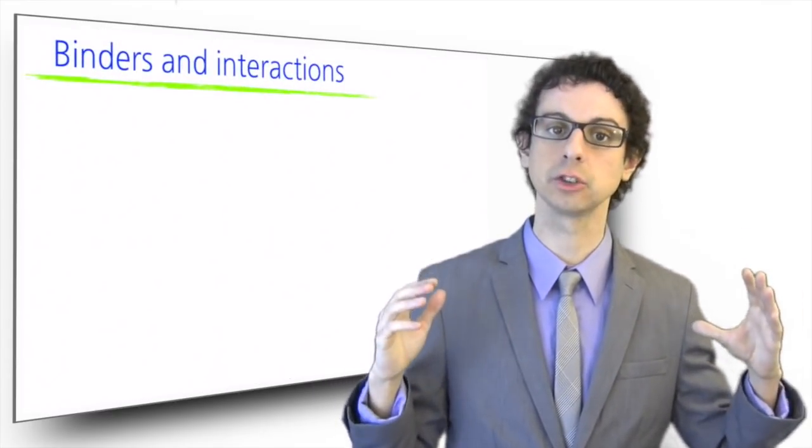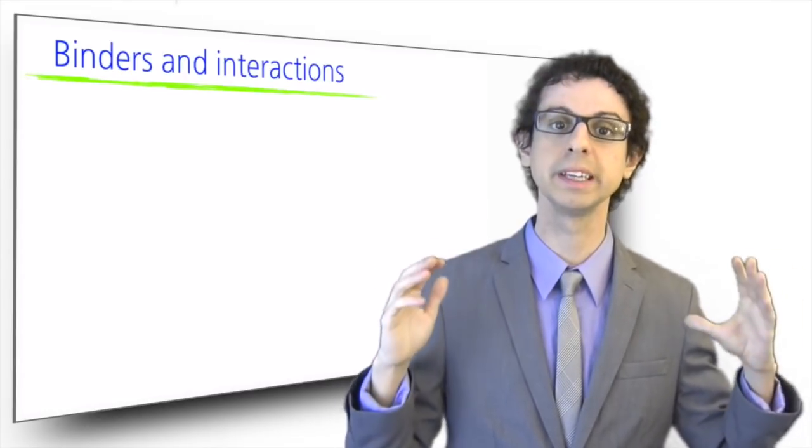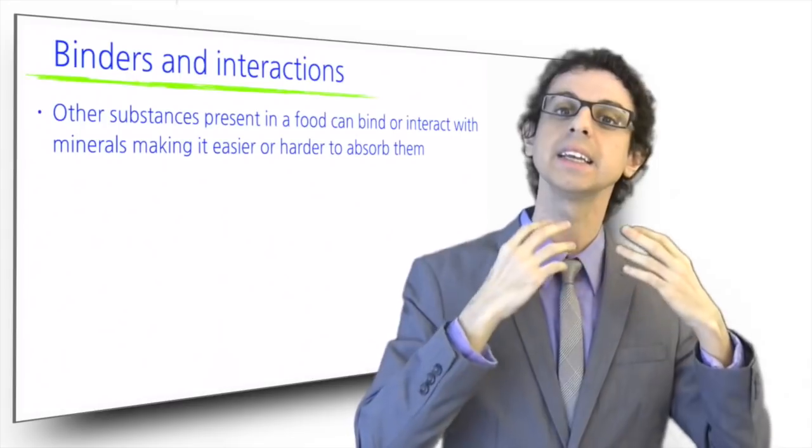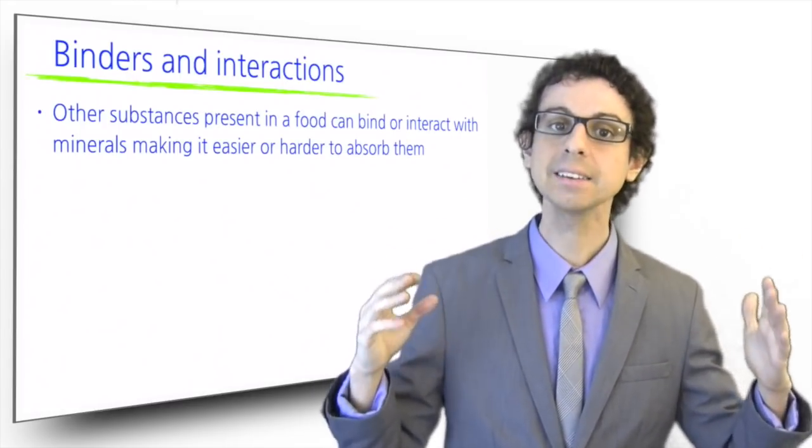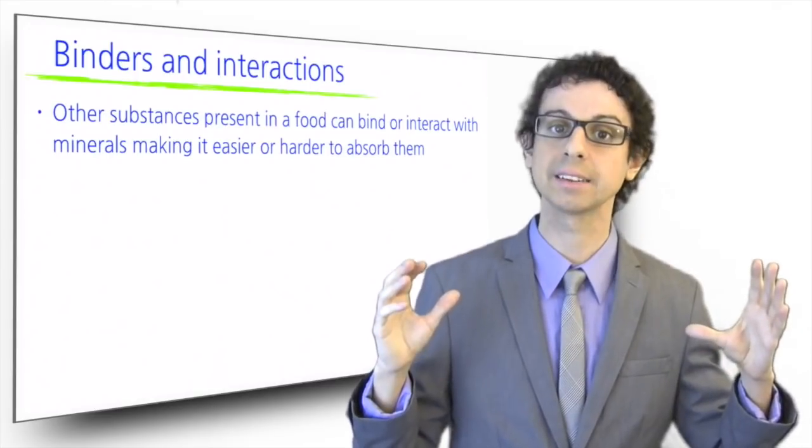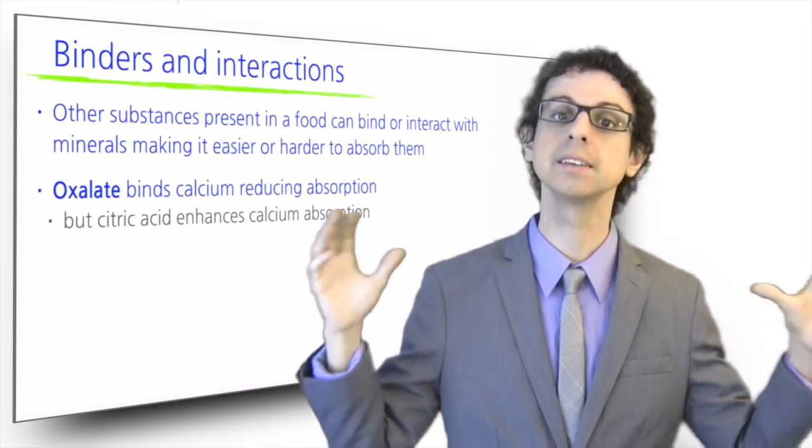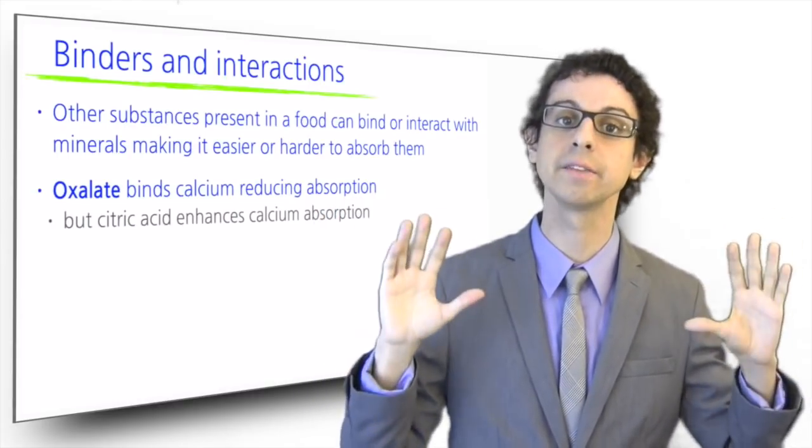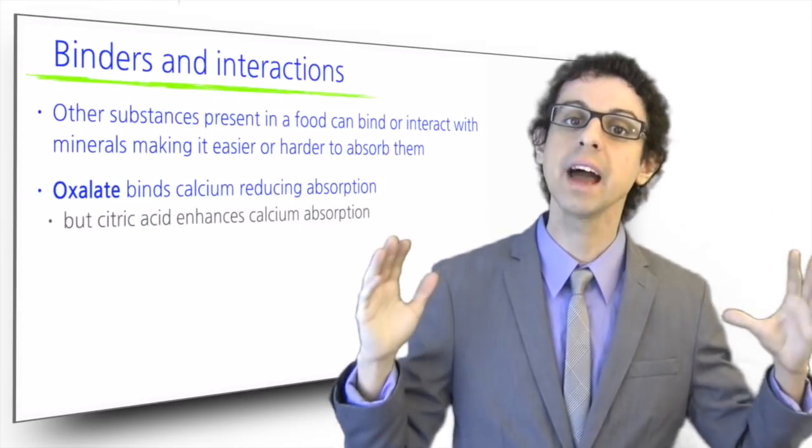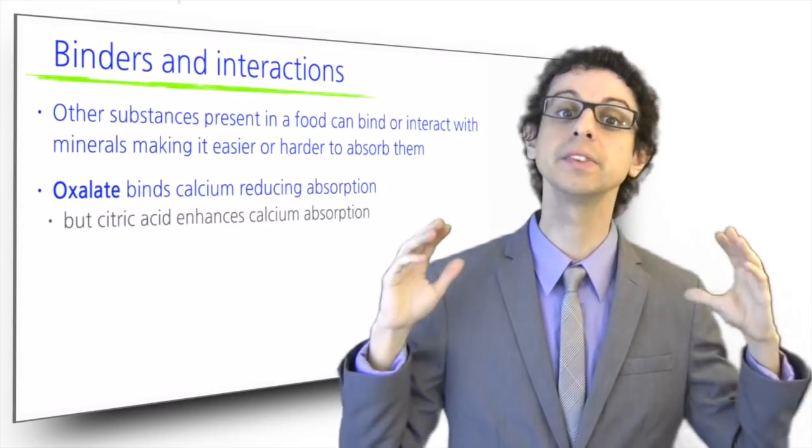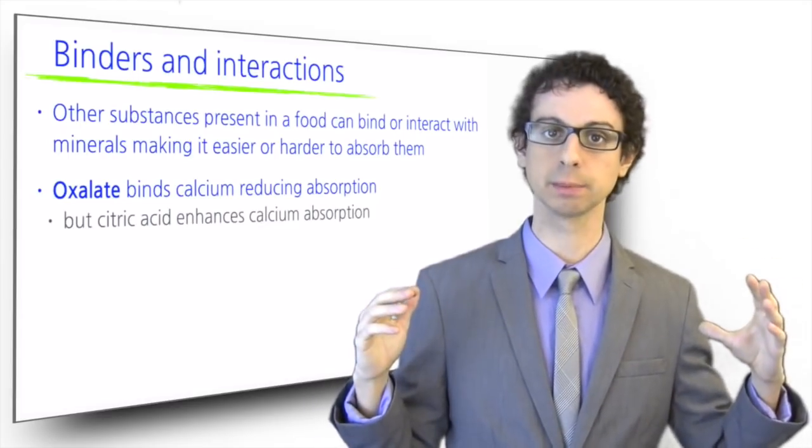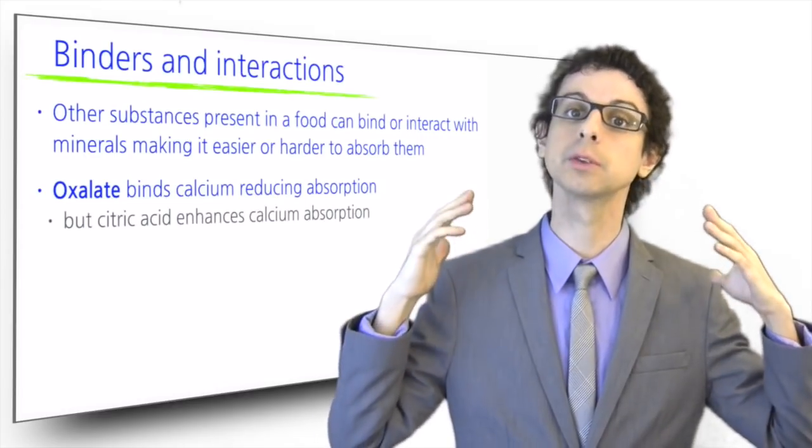The food matrix and its composition are important sources of variation in mineral bioavailability. Other substances present in a food can bind or interact with minerals, making it easier or harder to absorb them. For example, calcium in milk is absorbed at a rate of about 30%. Spinach has a comparable amount of calcium, but it is not a very good source because most of it is bound to oxalate, and so absorption is only 5%. Many other green leafy vegetables, however, such as kale or bok choy, are very good sources of bioavailable calcium, which is absorbed at 50 to 60%, more than milk itself. Citric acid enhances calcium absorption, so if you squeeze some lemon juice on your veggies, you will absorb even more calcium.